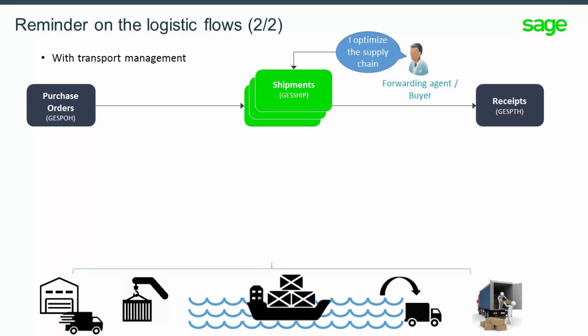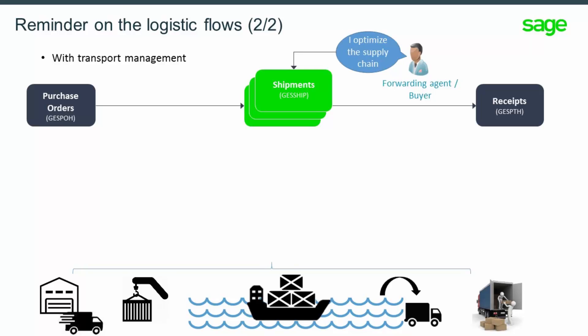When using shipments, the receipt is done by picking shipment instead of purchase order. As a shipment can group PO lines from different receipt sites and suppliers, only the shipment lines related to the current receipt site and supplier are available for picking. In this example, the forwarding agent responsible for the transportation organization sends information regarding the shipments to the buyer to monitor possible delays and missing goods.